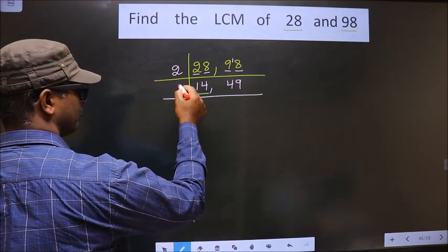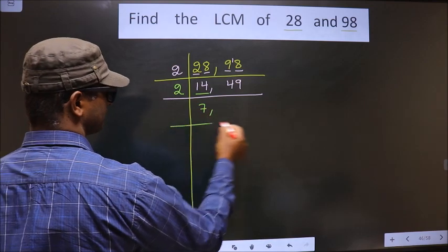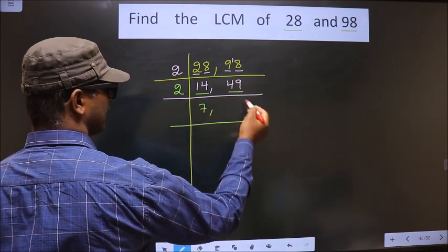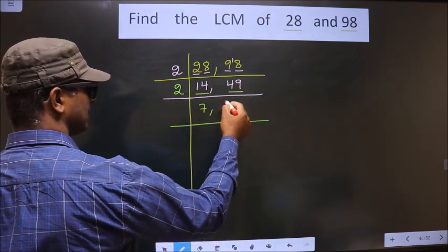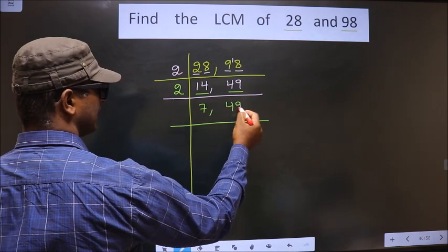Now here we have 14. 14 is nothing but 2 times 7. Here we have 49. 49 is not divisible by 2, so you write down 49 as it is.